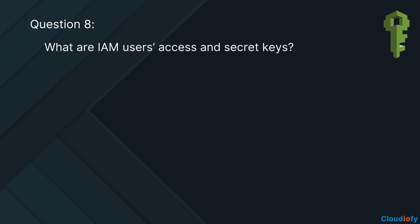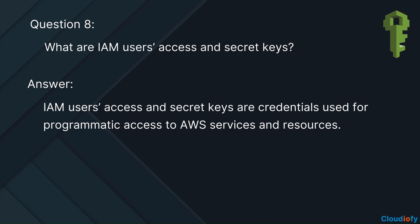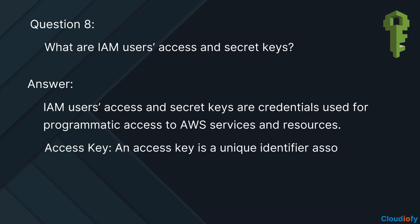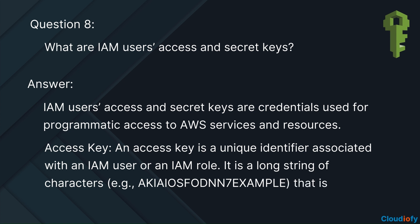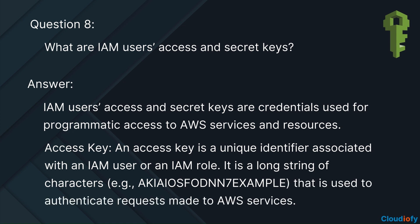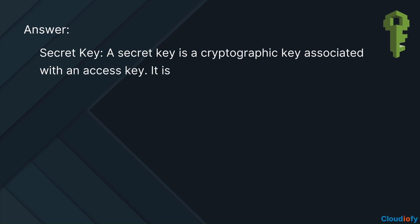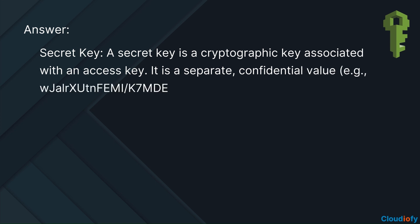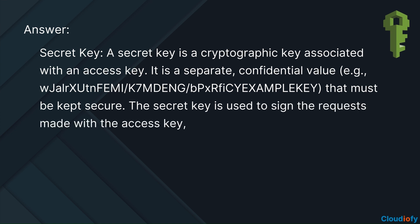What are IAM users' access and secret keys? IAM users' access and secret keys are credentials used for programmatic access to AWS services and resources. Access key: an access key is a unique identifier associated with an IAM user or role — a long string of characters used to authenticate requests made to AWS services. Secret key: a secret key is a cryptographic key associated with an access key, a confidential value that must be kept secure. It is used to sign the requests made with the access key, providing a form of authentication.